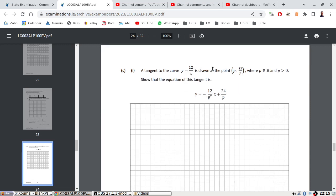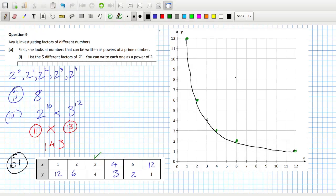A tangent curve is drawn at the point (p, 12/p). Show that - oh, just find the tangent at the point p. Okay, well that's no problem. So you have y = 12/x. The derivative: bring down the power and reduce the power by one. So the slope would be -12/p².